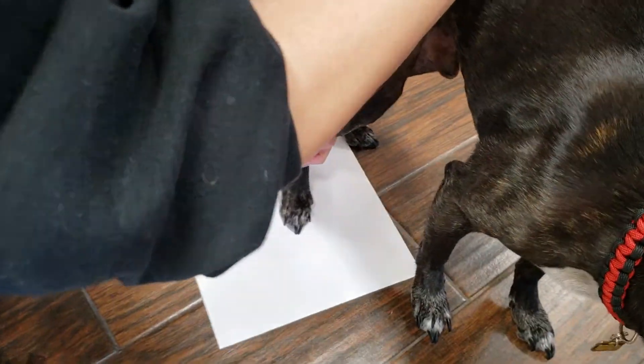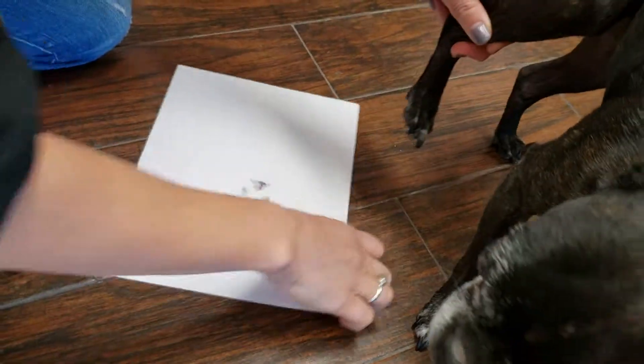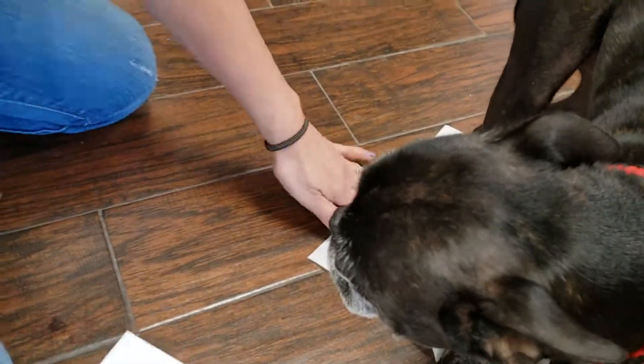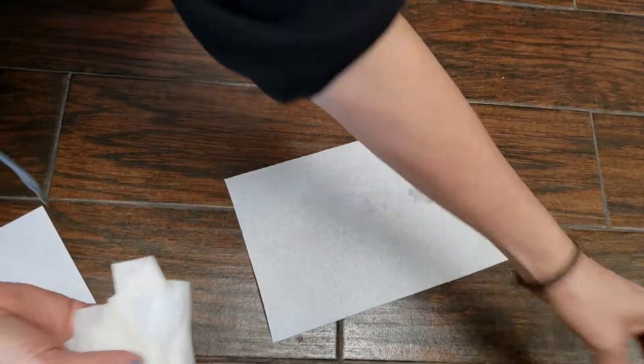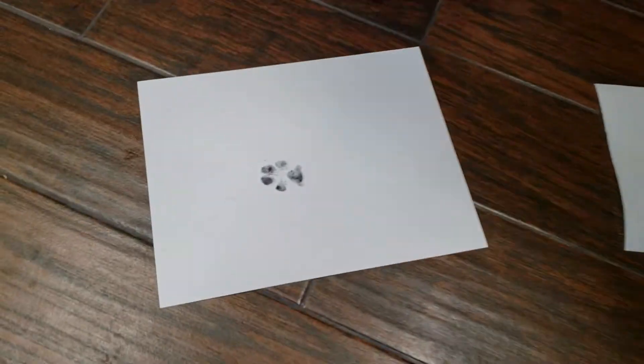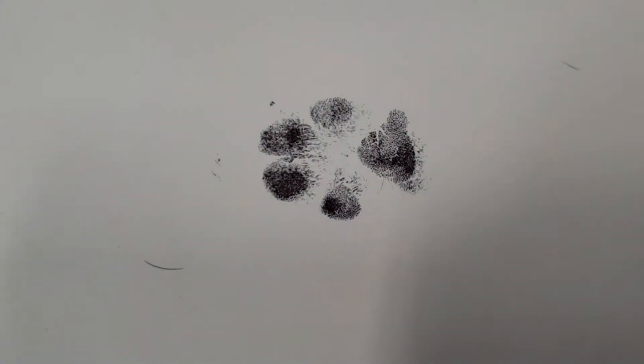If you're on carpet, no - don't do this on carpet. But on your floor, just put the paper towel underneath and you can wipe their paw off.